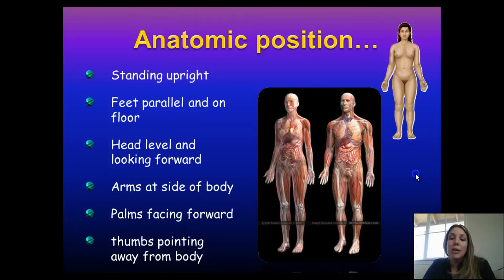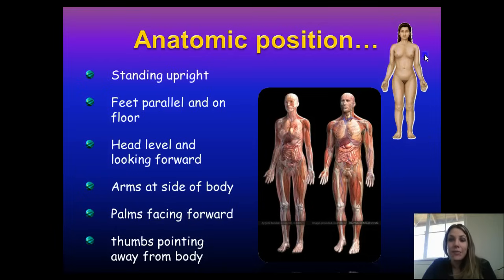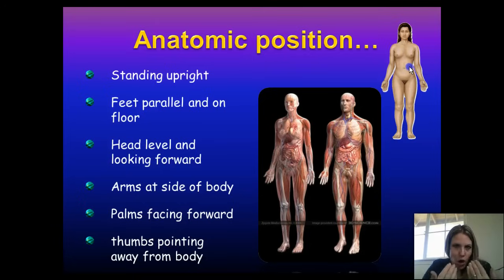Every term, every direction of the body discussed in A&P is from the perspective of the patient, not the observer. So if I'm referring to her arm over here, that is on the left side of the body — it's her left, not the observer's right. If I were to ask where her stomach is, I would say it's on her left, even though from my perspective it looks like the right.